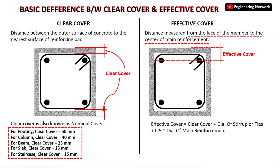If you have the clear cover, diameter of the stirrups or ties, and diameter of the main reinforcement, then you can easily calculate the effective cover of that particular structural member.